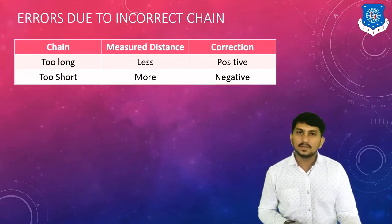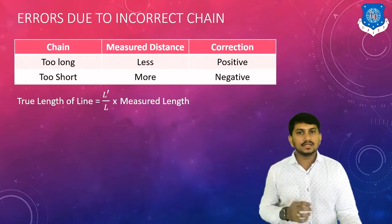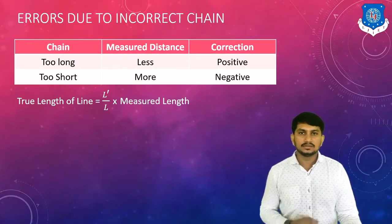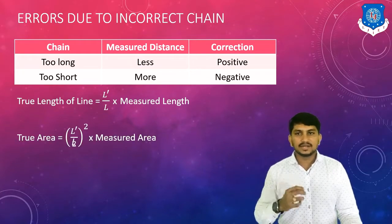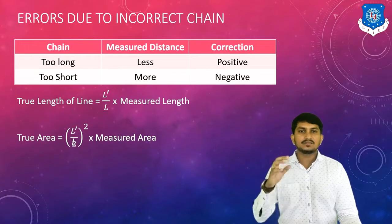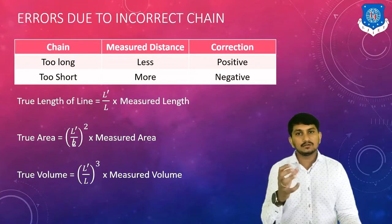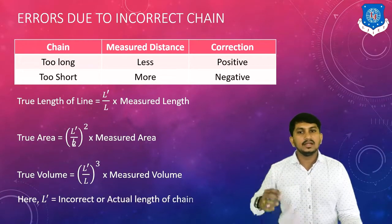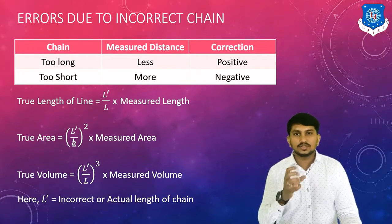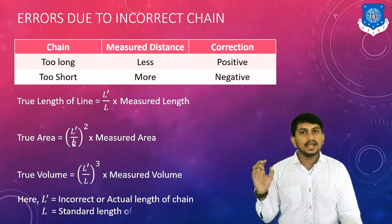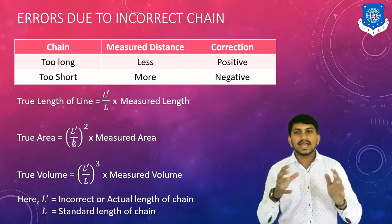To correct the work, we can use a number of formulas. For correcting the length of the line, the true length of the line equals L' divided by L, multiplied by the measured length. To correct the area, multiply the measured area by (L'/L) squared. To correct the volume, multiply the measured volume by (L'/L) cubed. Here, L' is the incorrect length of the chain after errors, and L is the standard length of the chain.